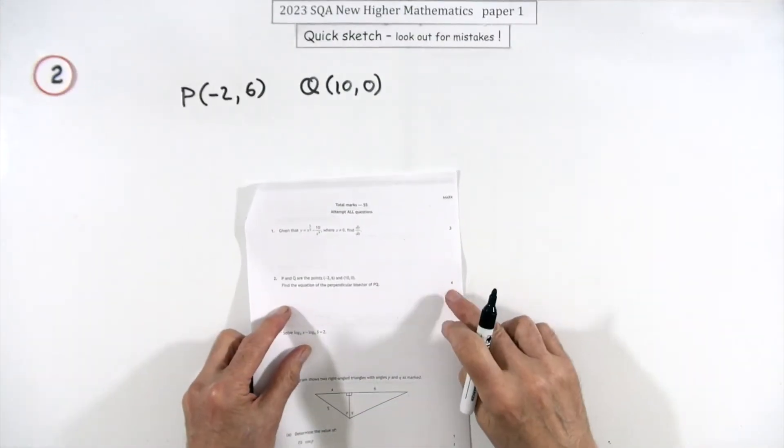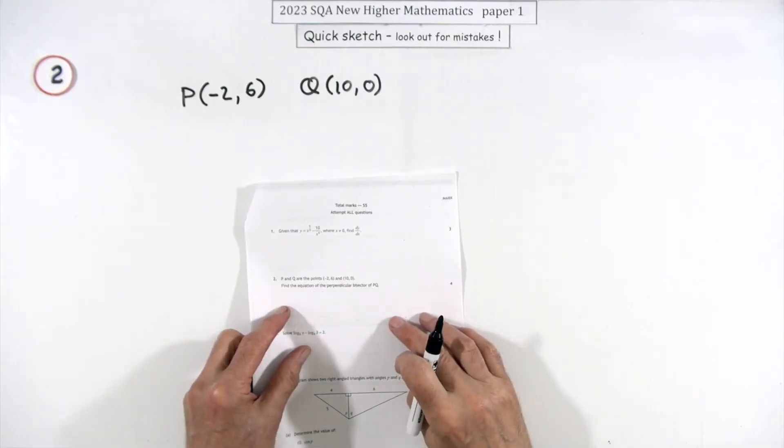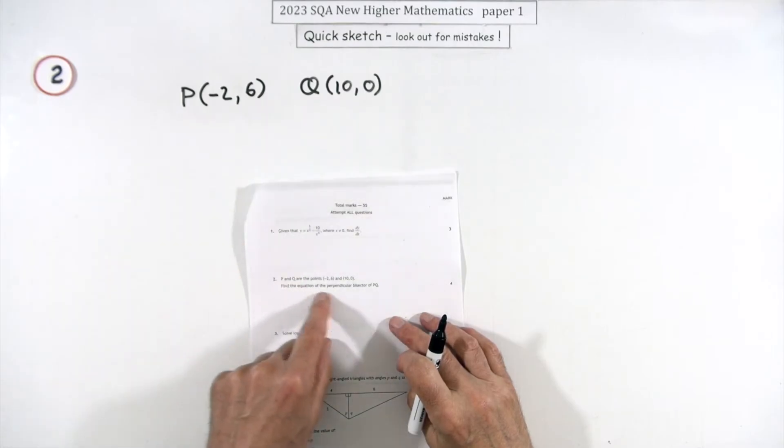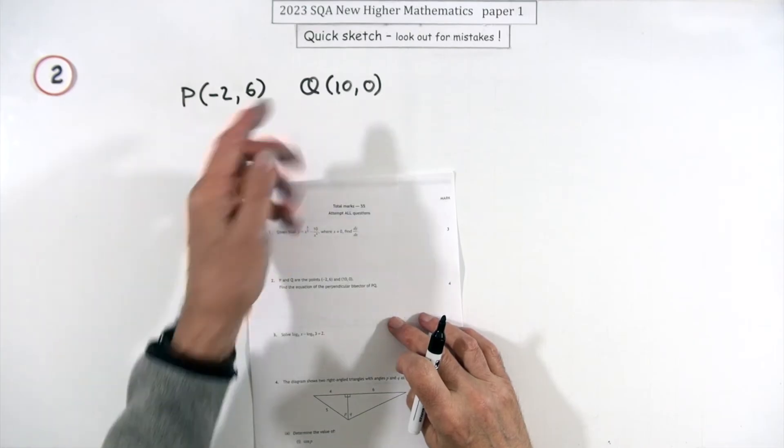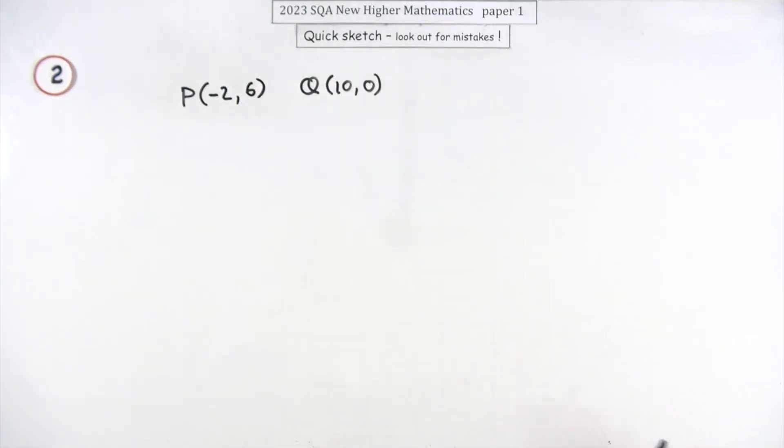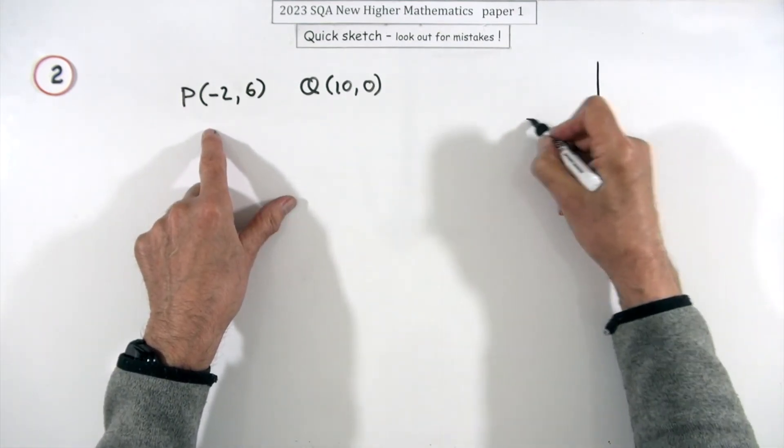Number two then, four marks this time for find the equation of a perpendicular bisector. If you're given these two points P and Q, you have to find the equation of the line that bisects that line segment PQ at right angles.